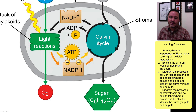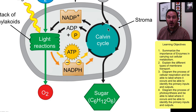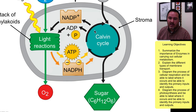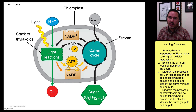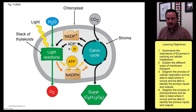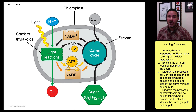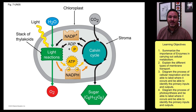These go into the Calvin cycle, sometimes called the dark reactions, though they can happen in the light. In the Calvin cycle, carbons are brought in and built up through different reactions until eventually you get sugar. And that's, in a nutshell, the reactions of both cellular respiration and photosynthesis.